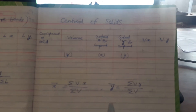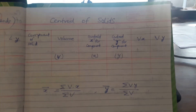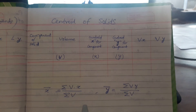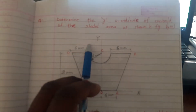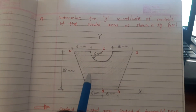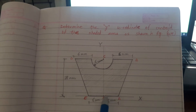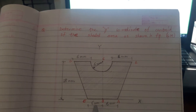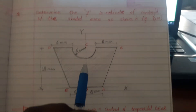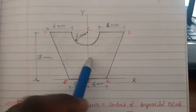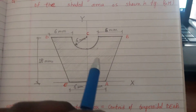This covers the theoretical part of how to find the centroid of any given figure. Now we will solve some numericals based on this. The numerical asks: determine the y-coordinate of the centroid of the shaded area as shown in the figure. The shaded area is indicated, with a y-axis, x-axis, and origin point shown. We first divide this figure into regular figures.